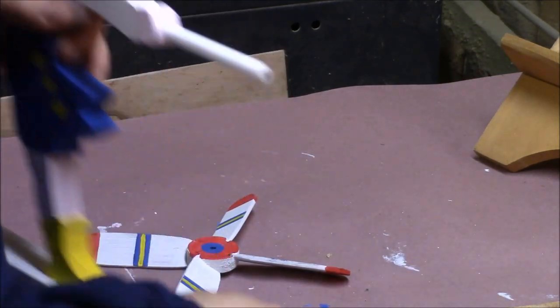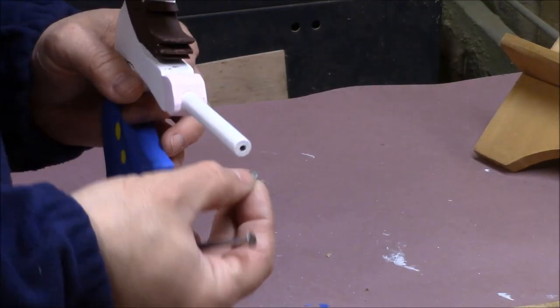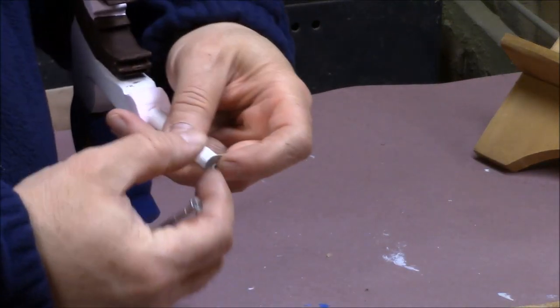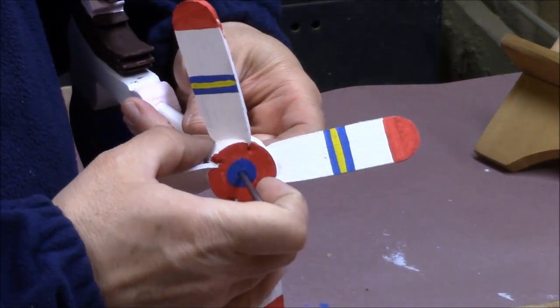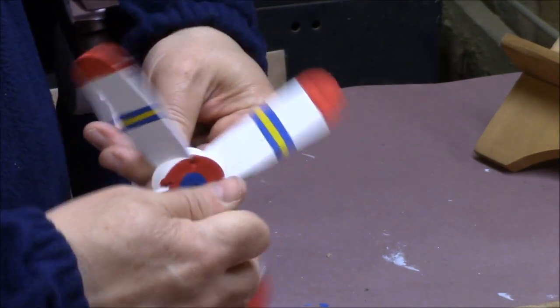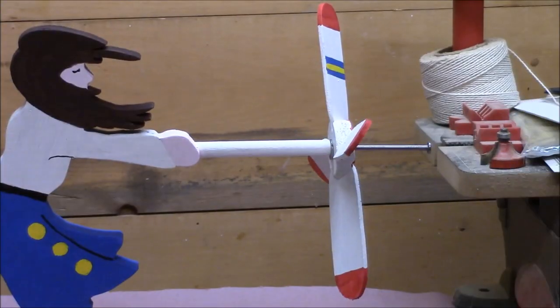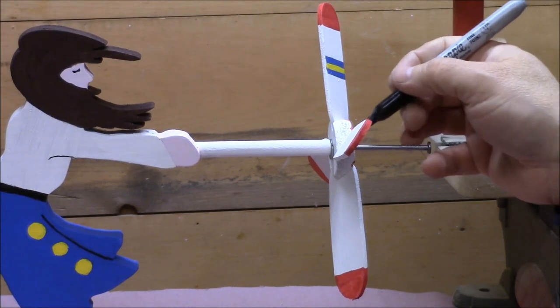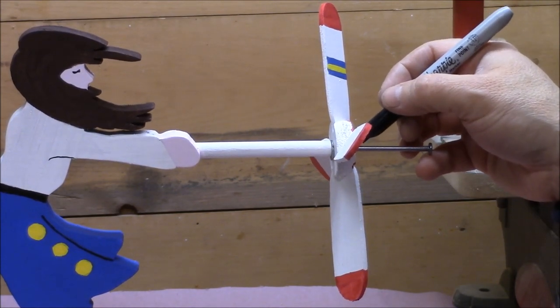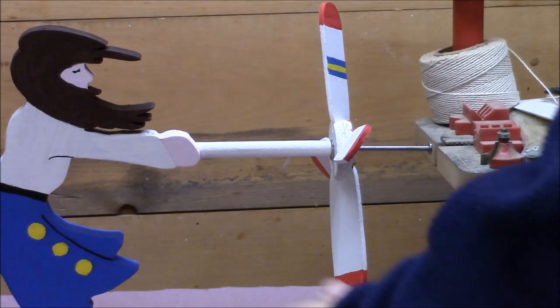So now I'm going to put it all together. I'm going to have a small washer and a propeller. Push it in all the way. Then I'll mark the distance with a marker. I'll take it apart.